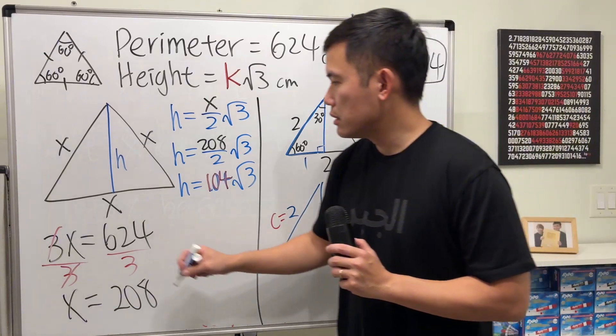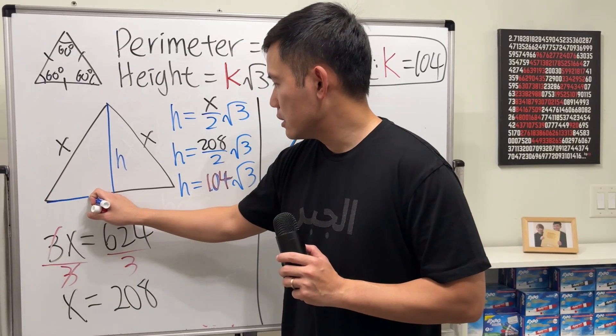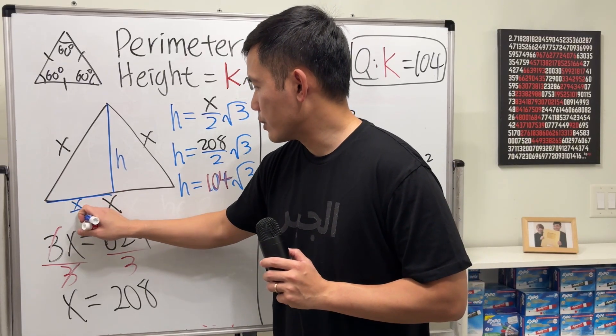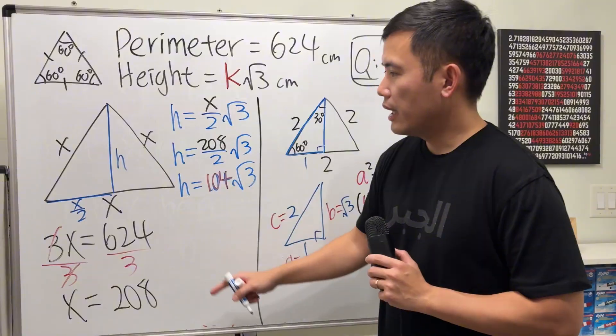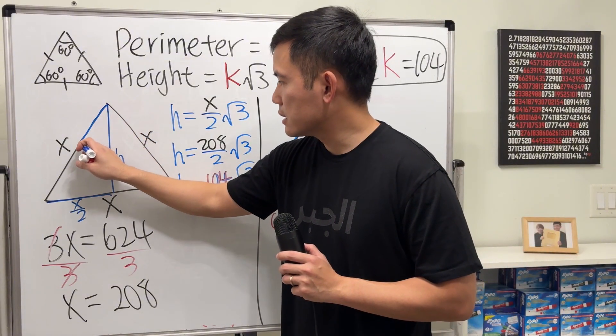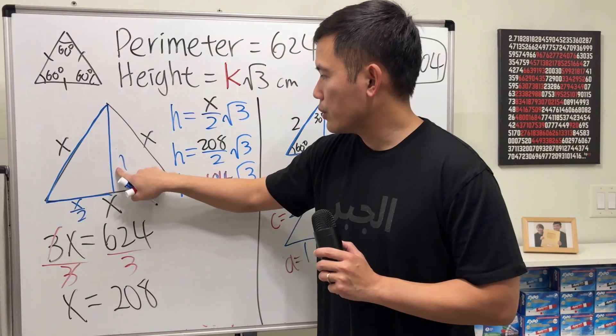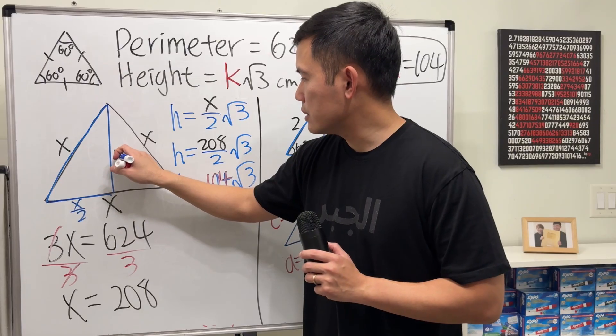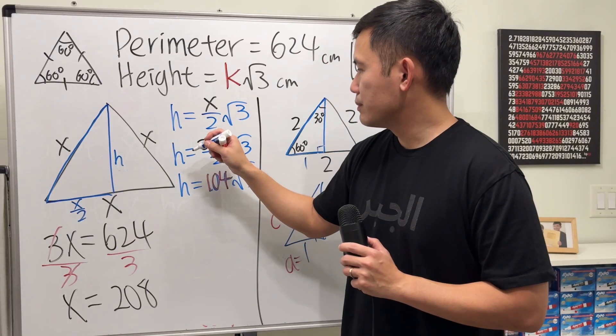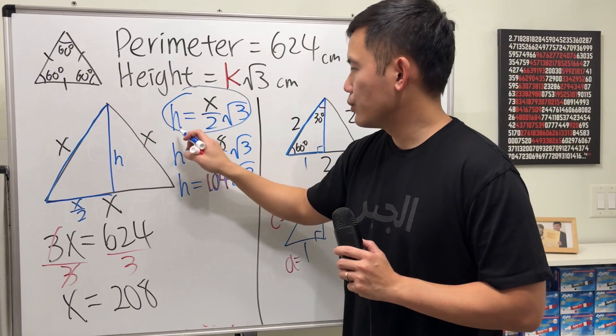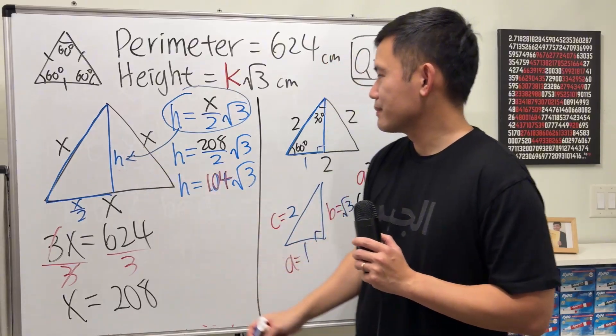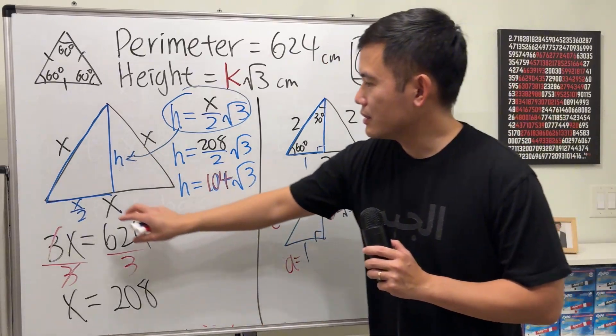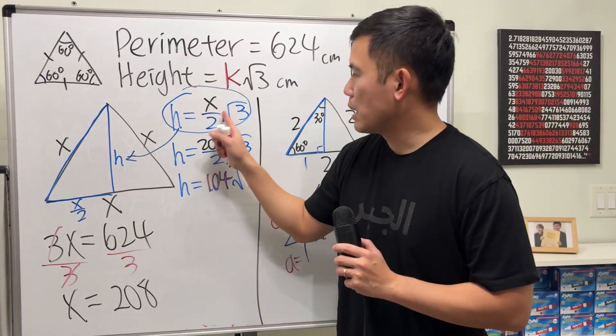So if we go back here, this is precisely x over 2. And this is, of course, the x. So we can see that the height is equal to that right there. I'll just put this right here. Yeah, because you just take this, multiply by square root of 3.